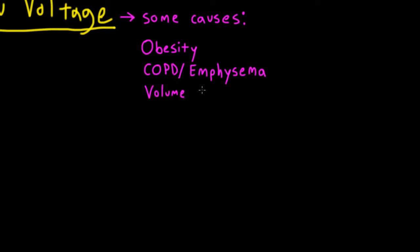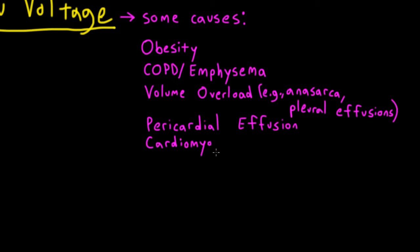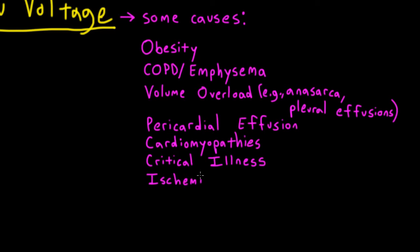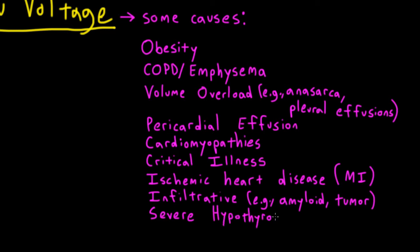Volume overload states such as anasarca or pleural effusions are also associated with low voltage. Other causes include pericardial effusion, cardiomyopathies of any number of etiologies, critical illness, ischemic heart disease, infiltrative disease such as amyloidosis, and severe hypothyroidism, which is also associated with sinus bradycardia.